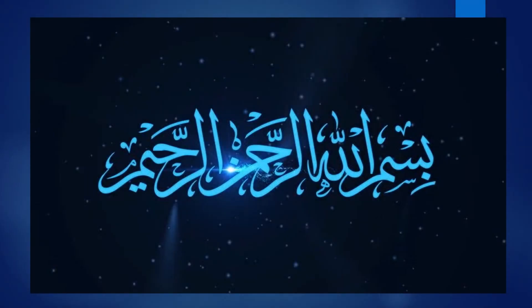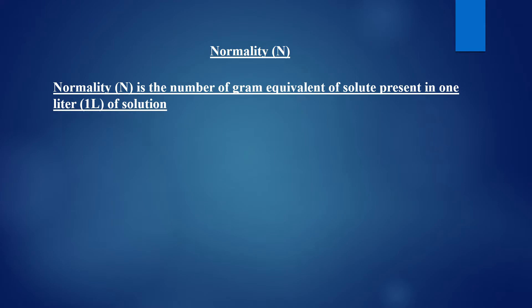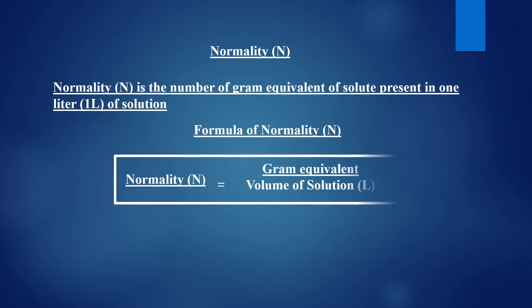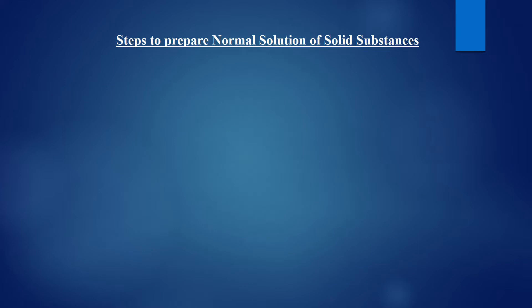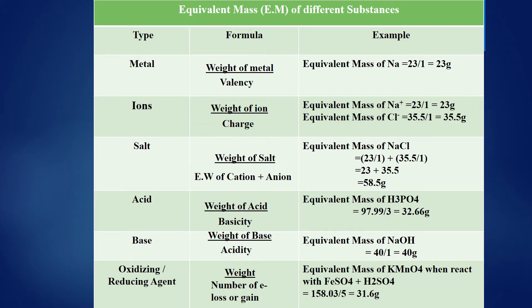In the previous video, we discussed what is normality and the formulas of normality. I also discussed that for preparation of a normal solution of any solid substance, always follow these three steps. In the previous videos, I also discussed how we can find equivalent mass of metals, ions, salts, acids, bases, and oxidizing or reducing agents.